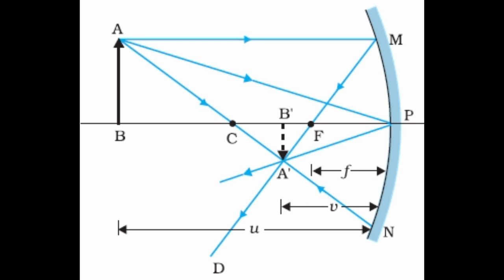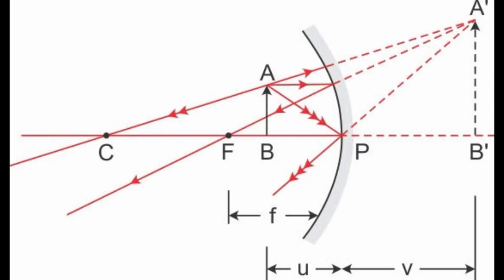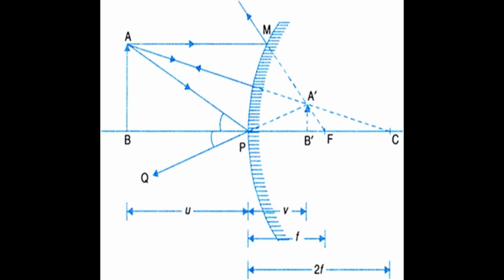Depending upon the position of the object, in the case of a concave mirror, two types of images are formed. One is a real image, which is formed in front of the mirror. The second is a virtual image, which is formed behind the mirror. In the case of a convex mirror, we always get a virtual image.